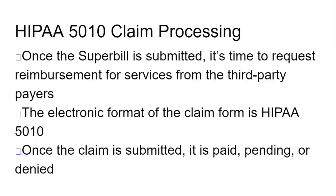HIPAA 5010 claim processing: once the super bill is submitted, it's time to request reimbursement for services from the third-party payer, which is our insurance. The electronic format of the claim form is the HIPAA 5010. If it's a paper form, it's the CMS 1500 form — but the electronic format of that is the HIPAA 5010. Once the claim is submitted, it is paid, pending, or denied.